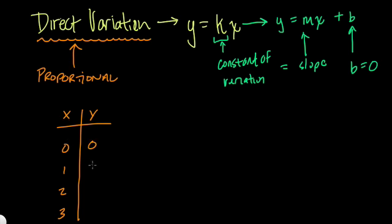Well, 0 times 3 is 0, 1 times 3 is 3, and 2 times 3 is 6, and 3 times 3 is 9. So this is a proportional or direct variation relationship. And the equation would just be y is always equal to x times 3, or 3x. And our constant of variation, our slope, is 3.